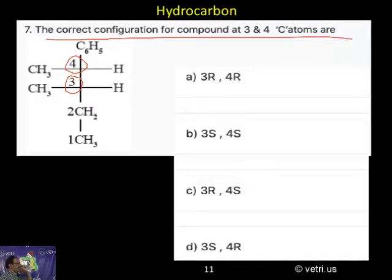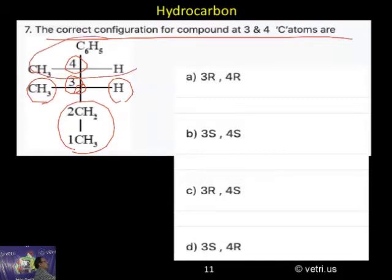Let me take the first one, carbon 3. This is 3. What are the groups present? Ethyl, hydrogen, methyl, and this entire group one.